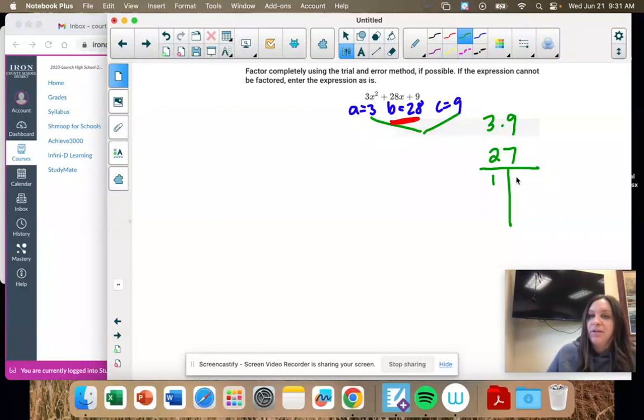My first one works. You always do 1 times that number. Sometimes you use it, sometimes you don't. And then there's 3 and 9. But this time we actually want 1 plus 27.